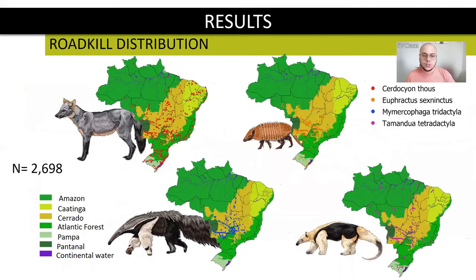As a result, we have almost 2,700 roadkills between the years of 2002 and 2016, with about 1,300 Cerdocyon thous, 508 Euphractus sexcinctus, 422 Myrmecophaga tridactyla, and 405 Tamandua tetradactyla.